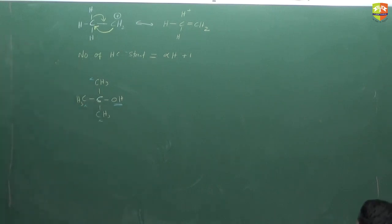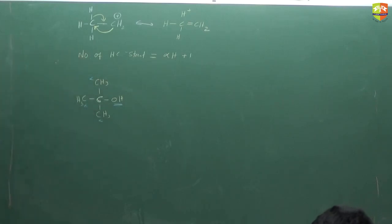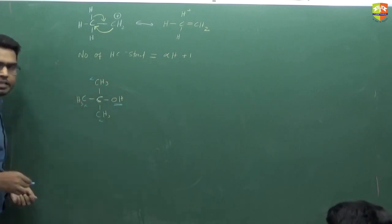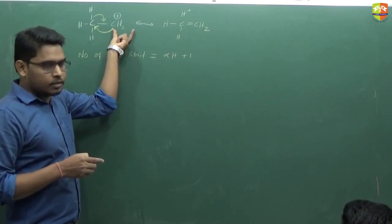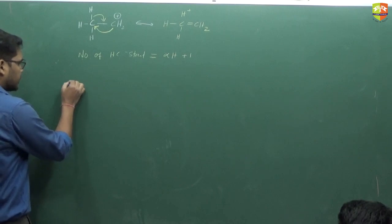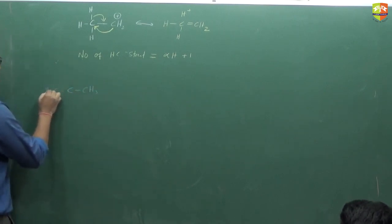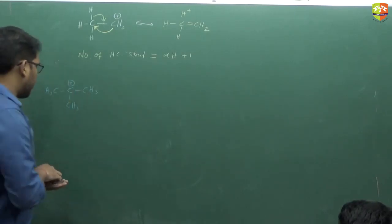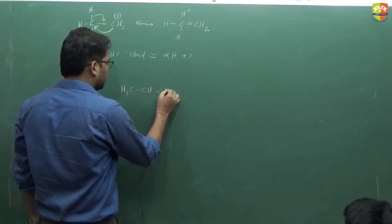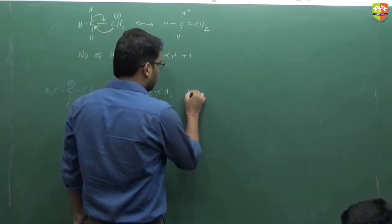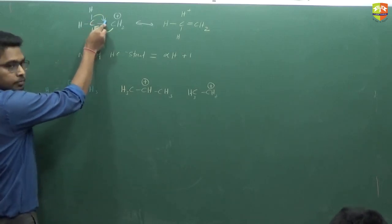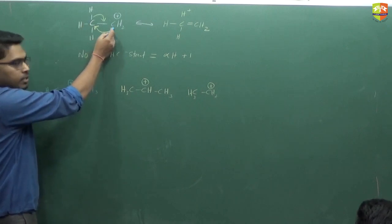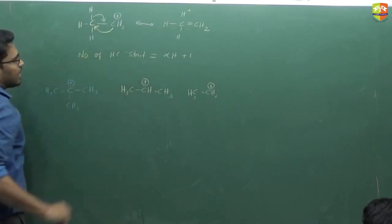Alpha carbons are all those carbons attached to the carbon that contains the functional group. In this case, the number of alpha hydrogens is 3 + 3 + 3 = 9. Hyperconjugation also stabilizes the carbocation — the sigma bond releases electrons to the positive carbon, neutralizing it. We know that electron-releasing groups stabilize carbocations.